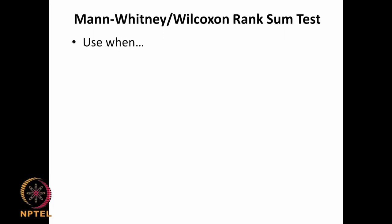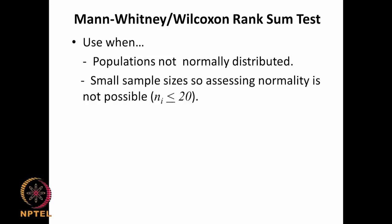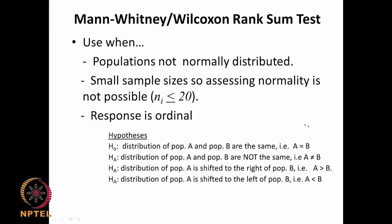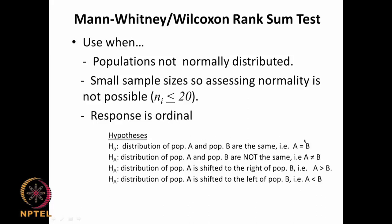Let us look at the Mann-Whitney Wilcoxon rank sum test. When do you use it? When the populations are not normally distributed, the sample size could be small — making it difficult to assume normality — and the response is ordinal, meaning integer-number type responses. The null hypothesis H0 is that distribution of population A equals population B. The alternate hypothesis HA could be: A is not equal to B, A is greater than B, or A is less than B.